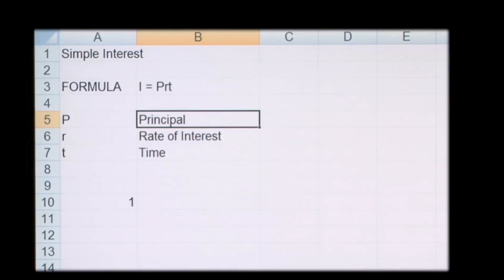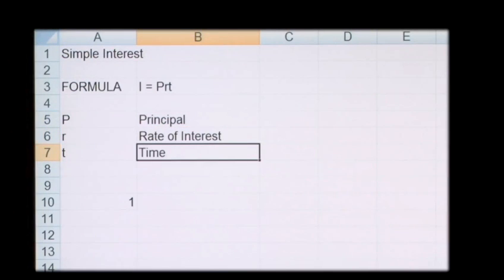In the formula, P stands for the principal amount, R stands for your rate of interest, and T stands for your time periods.